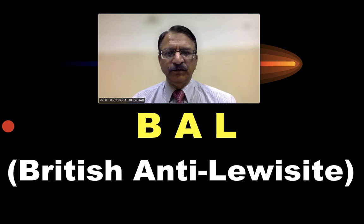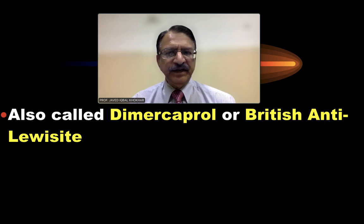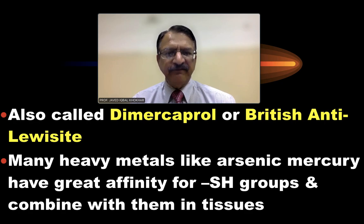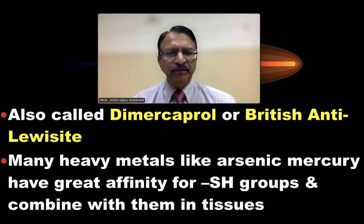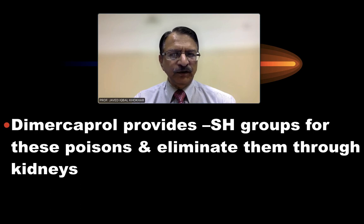Now about BAL, that is British Antileucite, also called Dimercaprol. Many heavy metals like arsenic and mercury have great affinity for the sulfhydryl group and combine with them in the tissues. Dimercaprol provides sulfhydryl groups for these poisons and eliminates them through the kidneys.